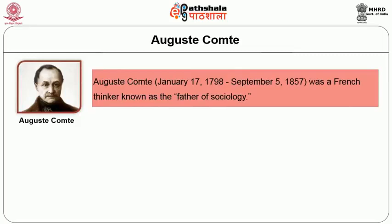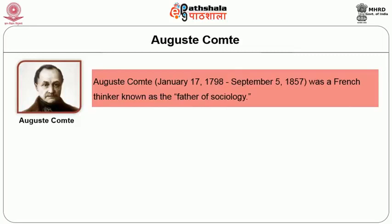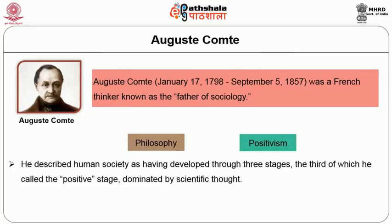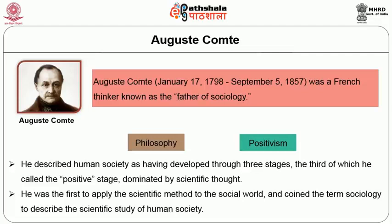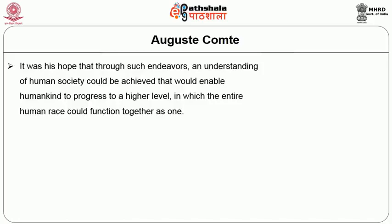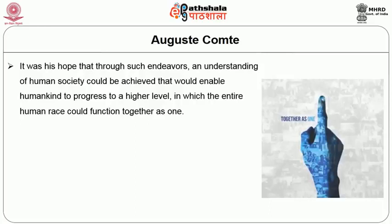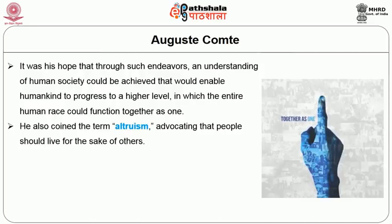Auguste Comte was a French thinker known as the father of sociology. He developed a sociology called positivism in which he described human society as having developed through three stages, the third of which he called the positive stage, dominated by scientific thought. He was the first to apply the scientific method to the social world and coined the term sociology to define the scientific study of human society. It was his hope that through such endeavours, an understanding of human society could be achieved that would enable humankind to progress to a higher level in which the entire human race could function together as one. He also coined the term altruism, advocating that people should live for the sake of others.